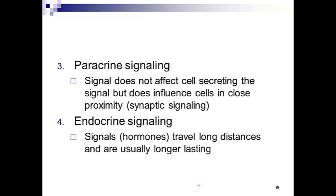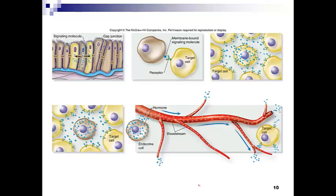In paracrine signaling, the signal does not bind to the cell that secretes it, but it does influence those cells around it. Synaptic signaling is a nice example: neurotransmitters being released don't necessarily stimulate the cell that secreted them, but they do stimulate cells connected through neuromuscular junctions. Finally, hormones are part of endocrine signaling — hormones can be secreted from one area of the body, travel through the body's system, and impact cells that are long distances away. So we have signaling in the immediate area and also long-reaching signaling in the example of endocrine signaling.